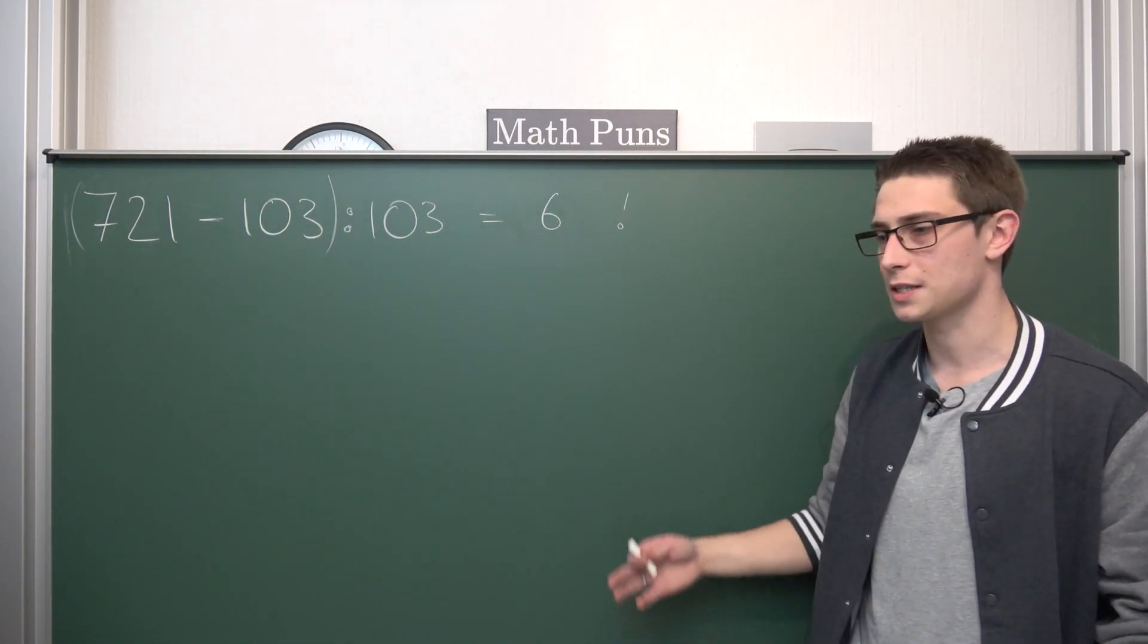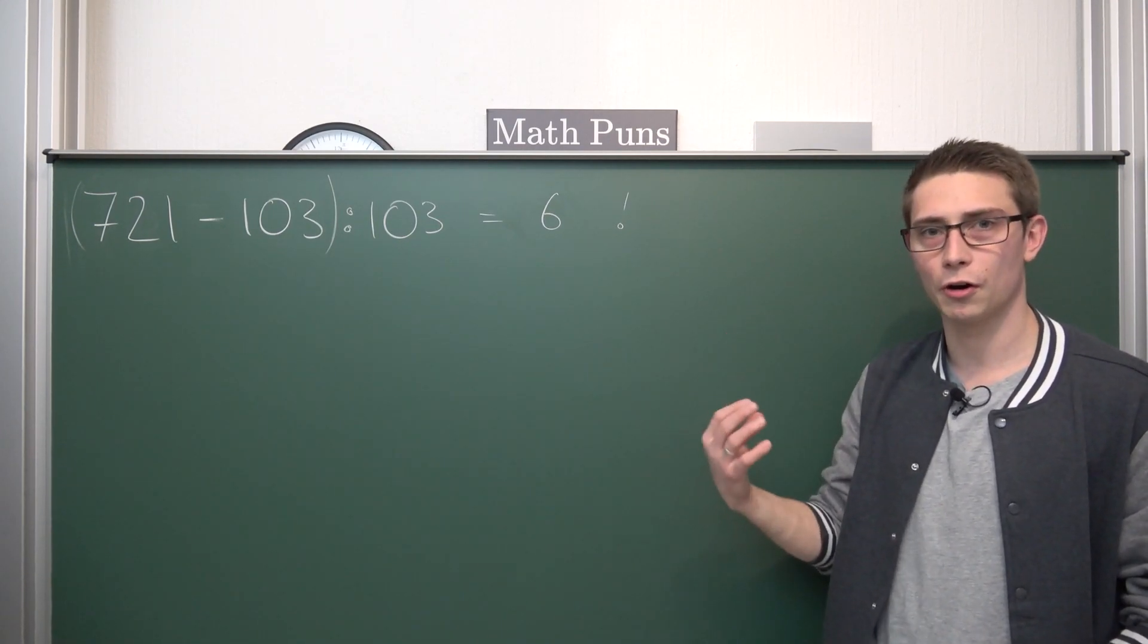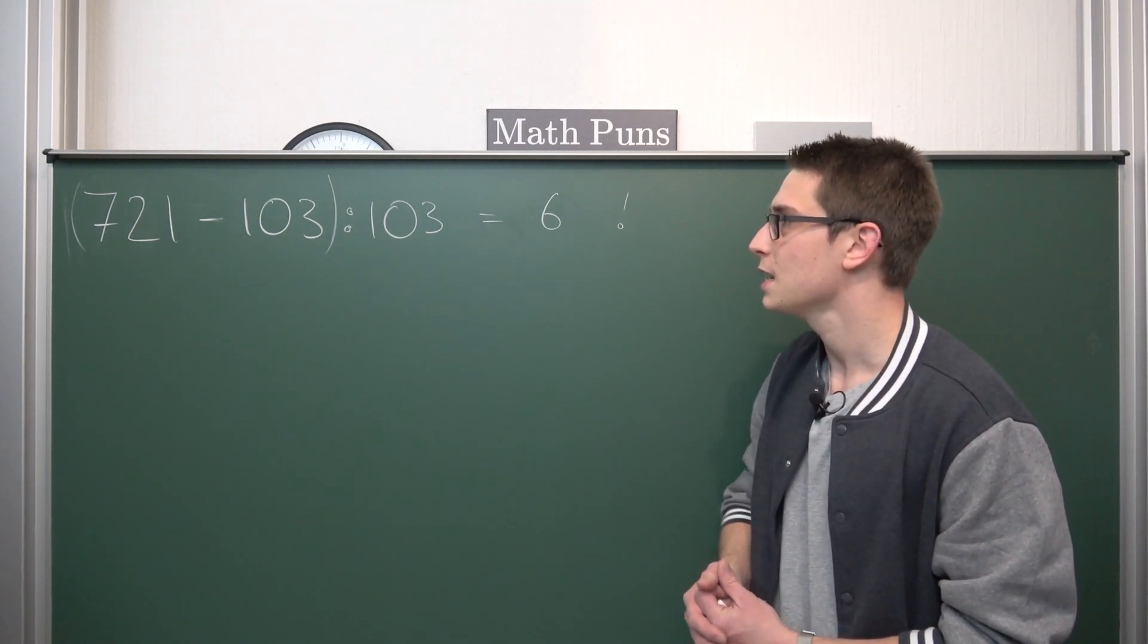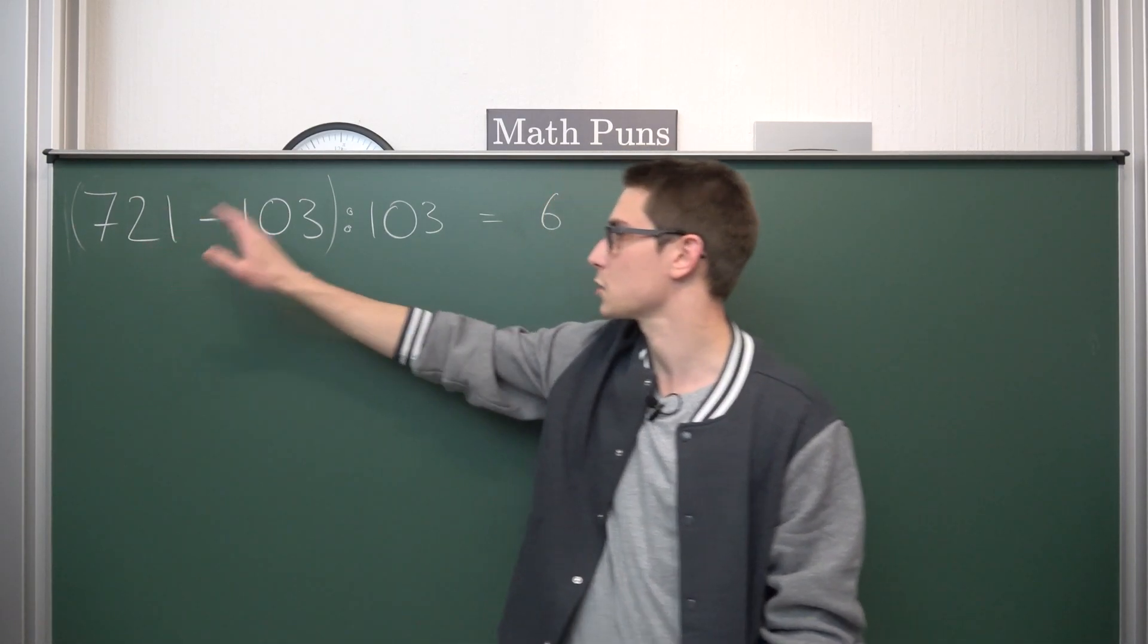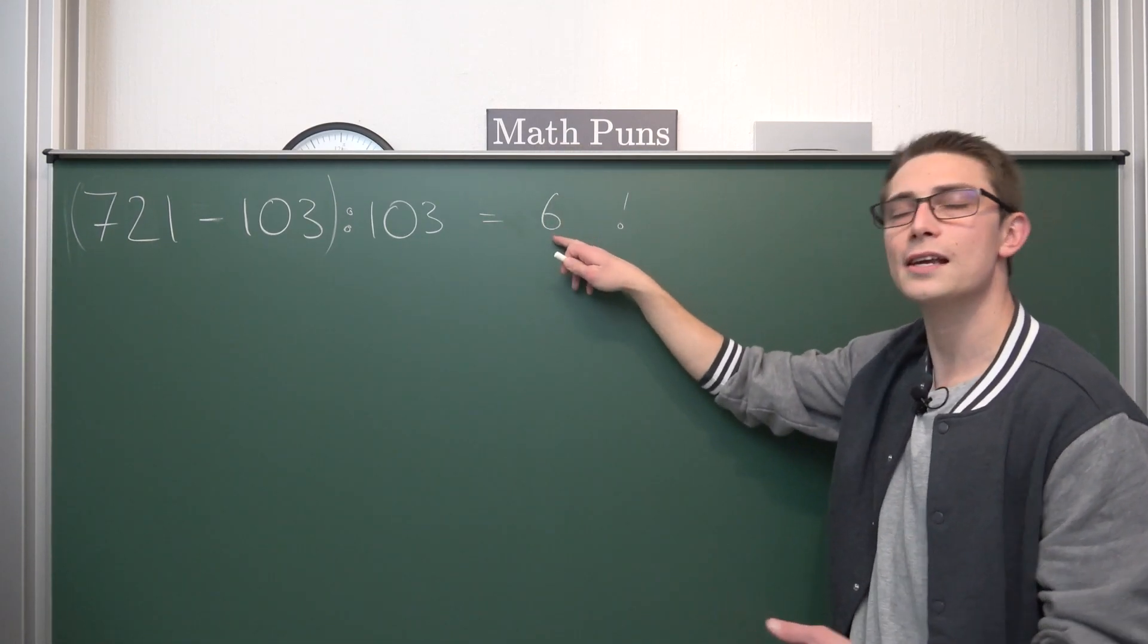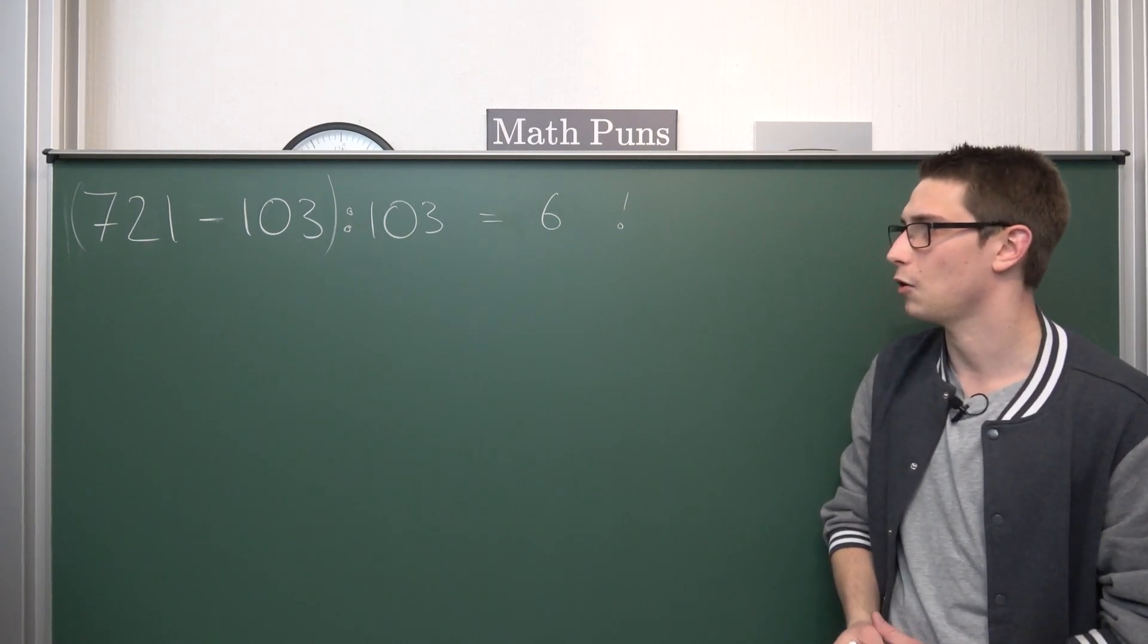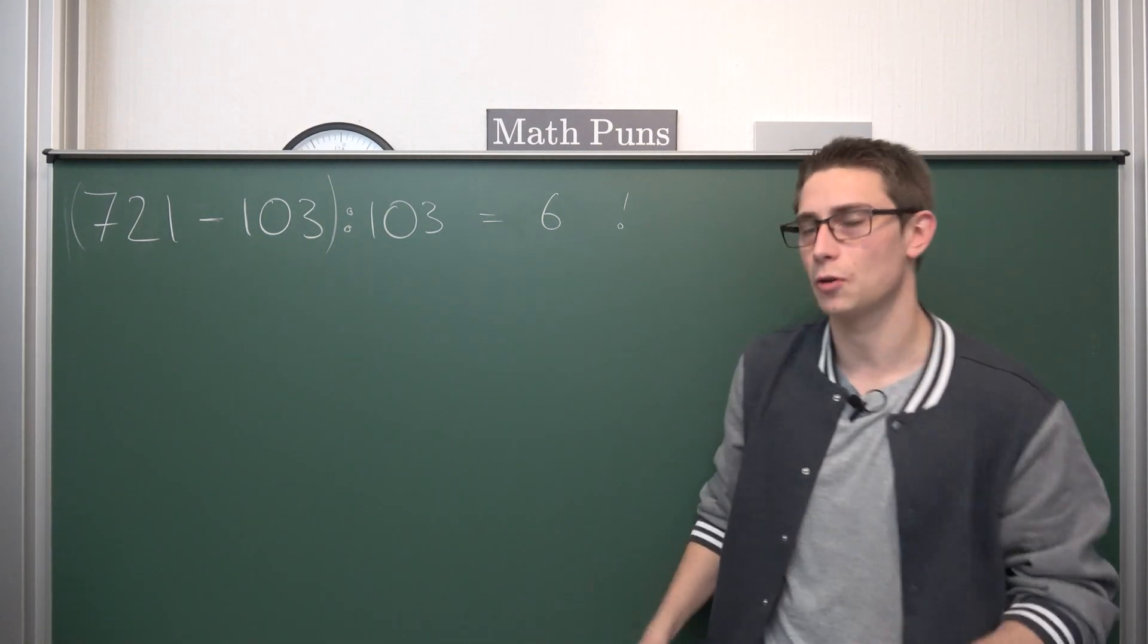But if we just use all the nice field axioms and just do the order of operations right, how you should do it, okay, if there are no implicit parentheses placed, then we are going to divide 103 by 103 at first giving us 1. 721 minus 1 is going to give us 720 which is obviously 6 factorial, not 6, it's 6 factorial. And yeah, this is one of the solutions that you could get out. But how do those equations actually look like? So we have two types of equations.